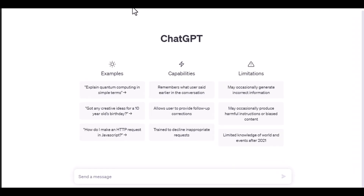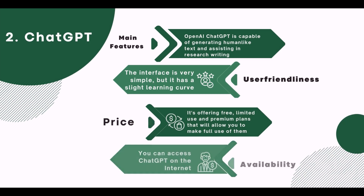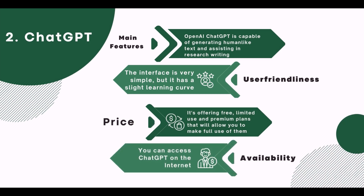2. ChatGPT. Main Features: OpenAI ChatGPT is capable of generating human-like text and assisting in research writing. User Friendliness: The interface is very simple, but it has a slight learning curve. Pricing: It offers free limited-use and premium plans that will allow you to make full use of them. Availability: You can access ChatGPT on the internet.